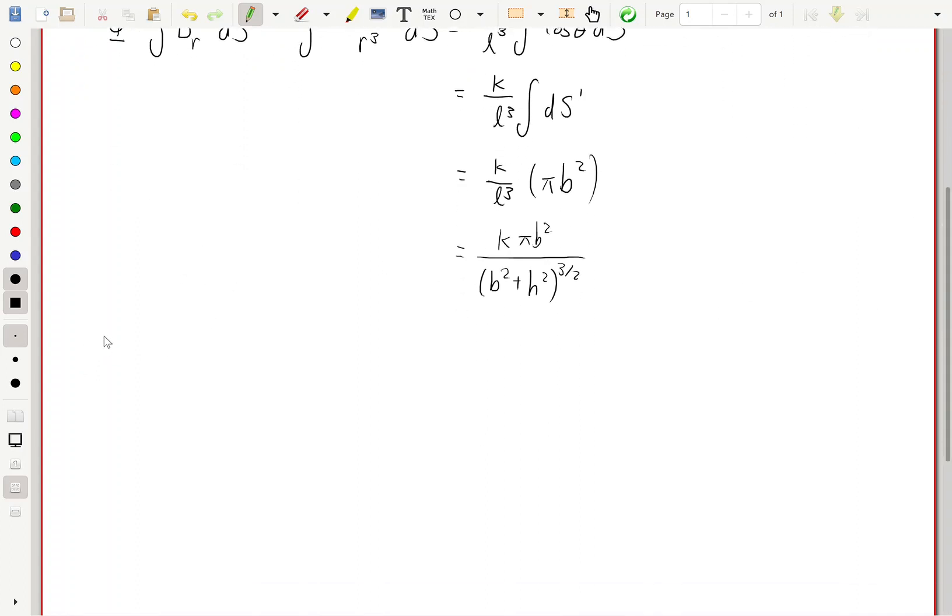Now, what we have is that the electromotive force, its magnitude is going to be given by the time derivative of the magnetic flux with respect to time. So all we need to do is differentiate this expression, and when we do, we get an expression that looks like this: 3k pi b squared h over b squared plus h squared to the power of 5 over 2, times dh over dt.